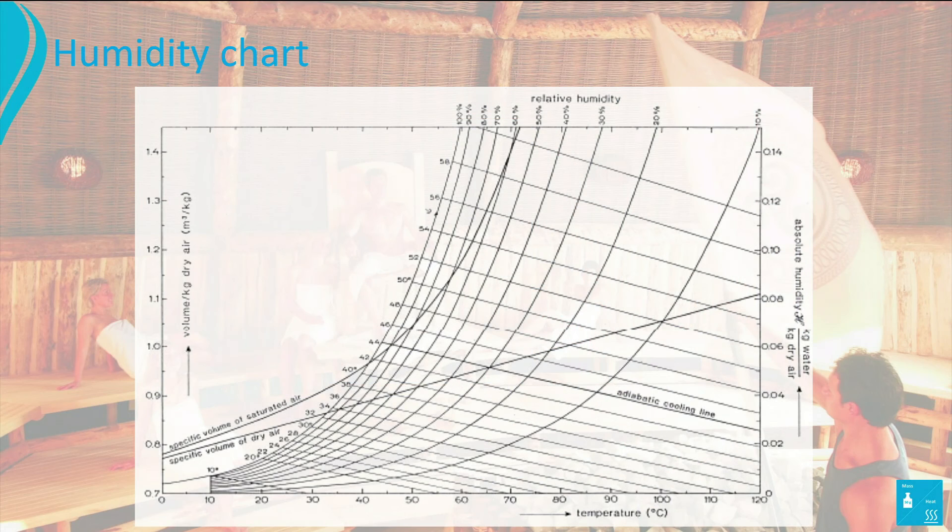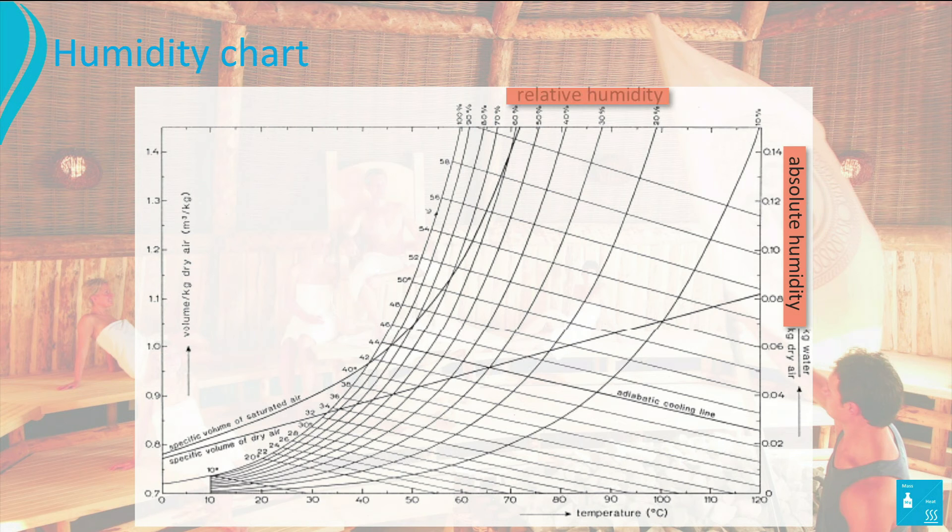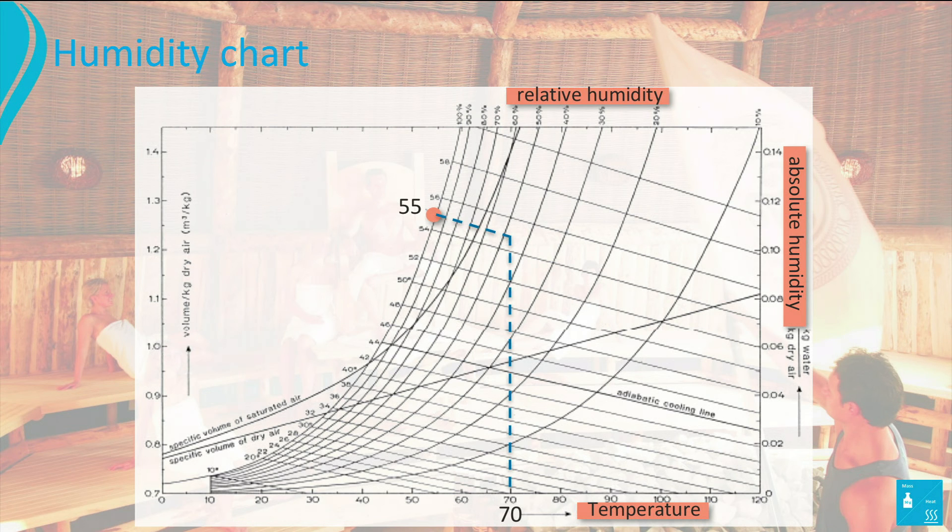What are the absolute and relative humidity of air with a temperature of 70°C and a wet-bulb temperature of 55°C? We move along the adiabatic cooling line to the right to 70°C and see that the absolute humidity is 0.105 kg water per kg dry air. We also see that the relative humidity is 49%.